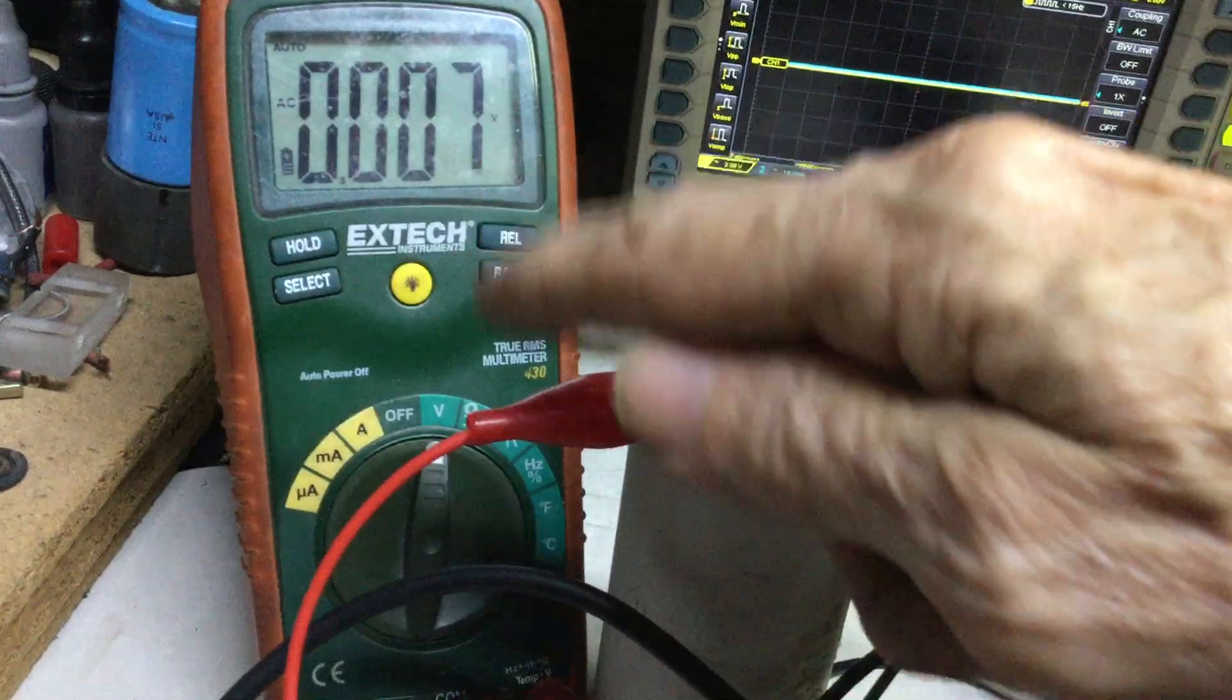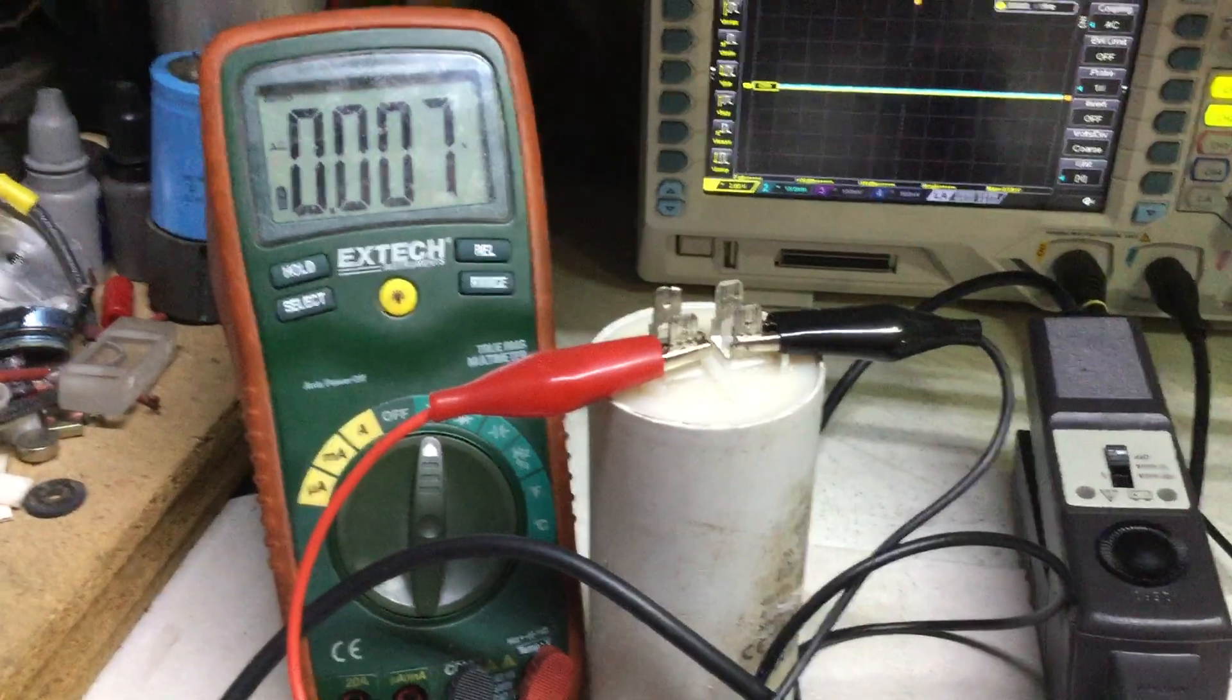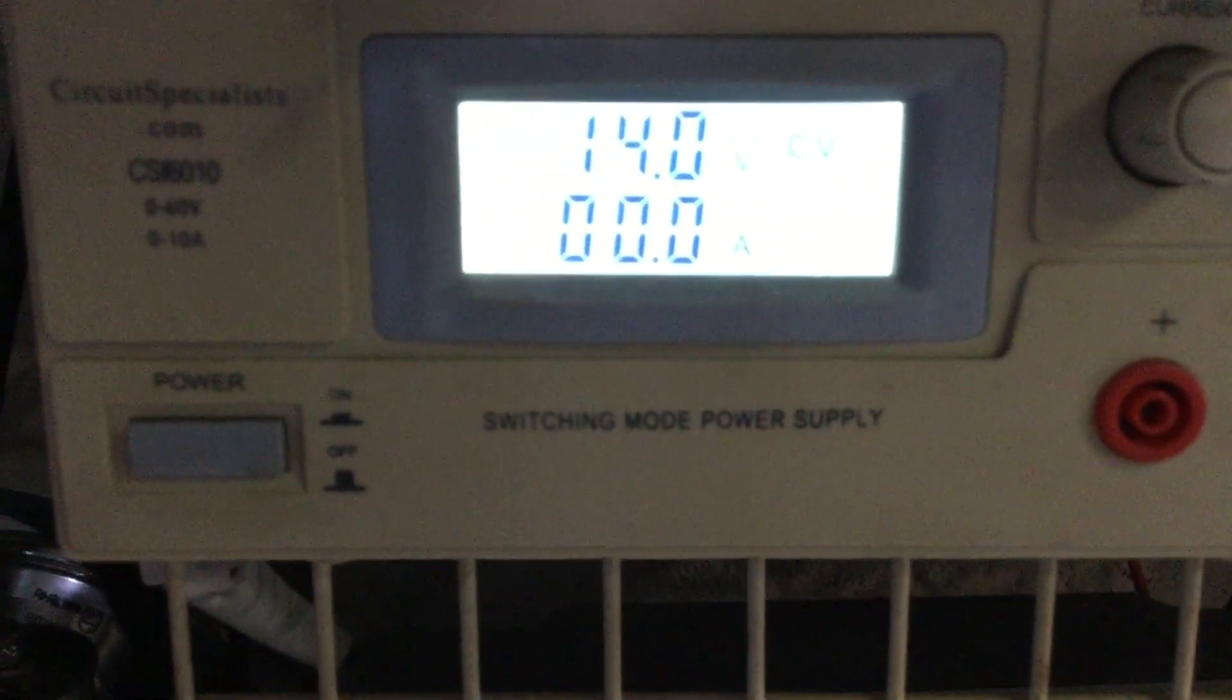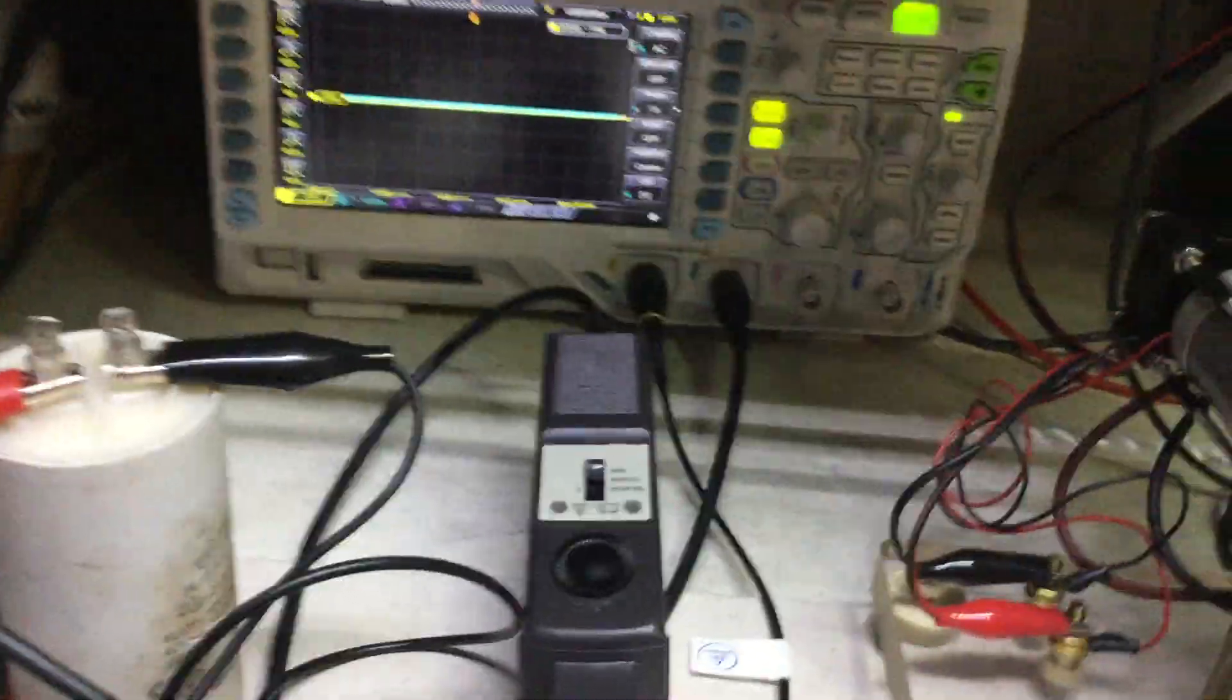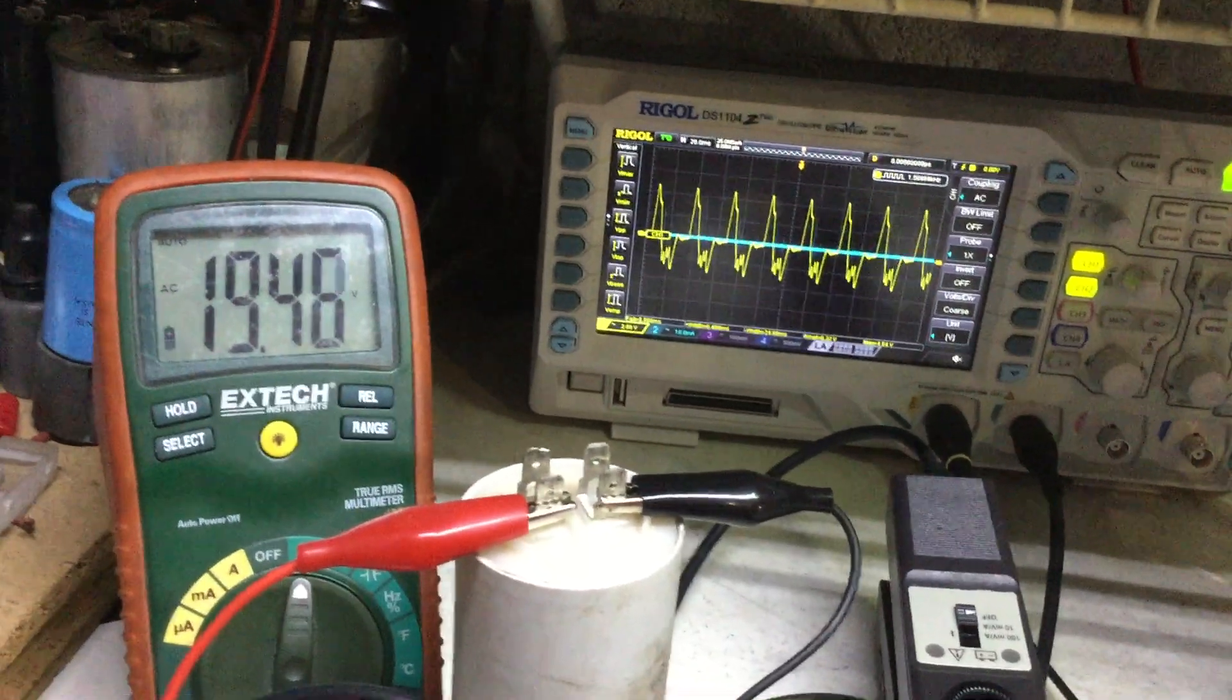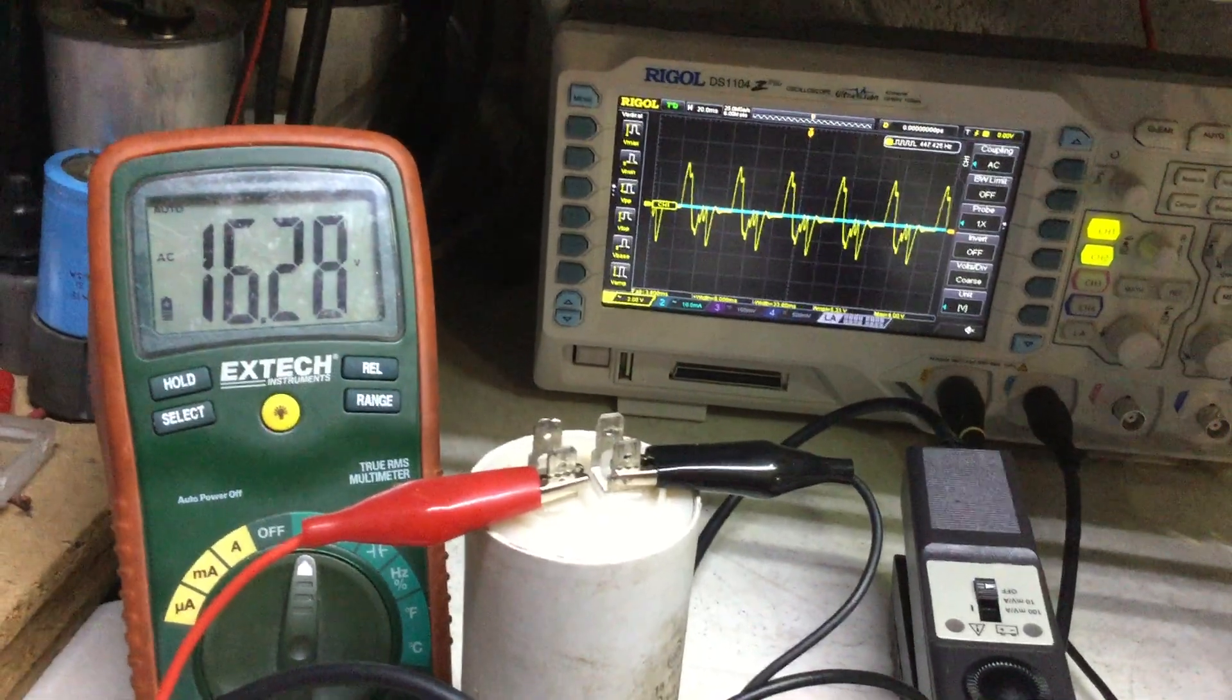Right now I have the clamp off. The input is 14 volts, and once I start spinning the motor, just turning on the motor, it will start generating. Right here is where it equals the output, more or less.